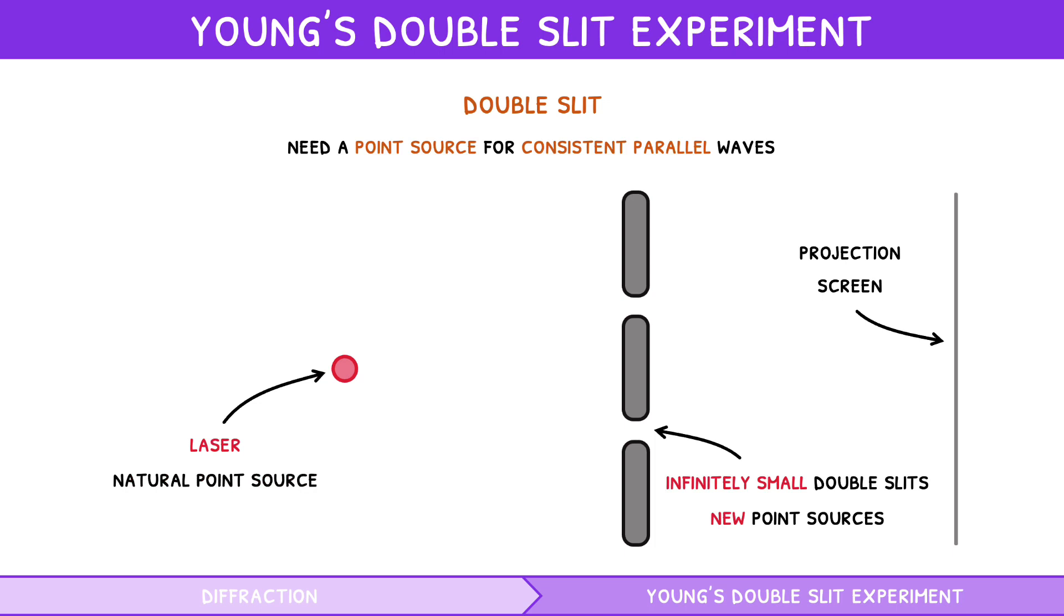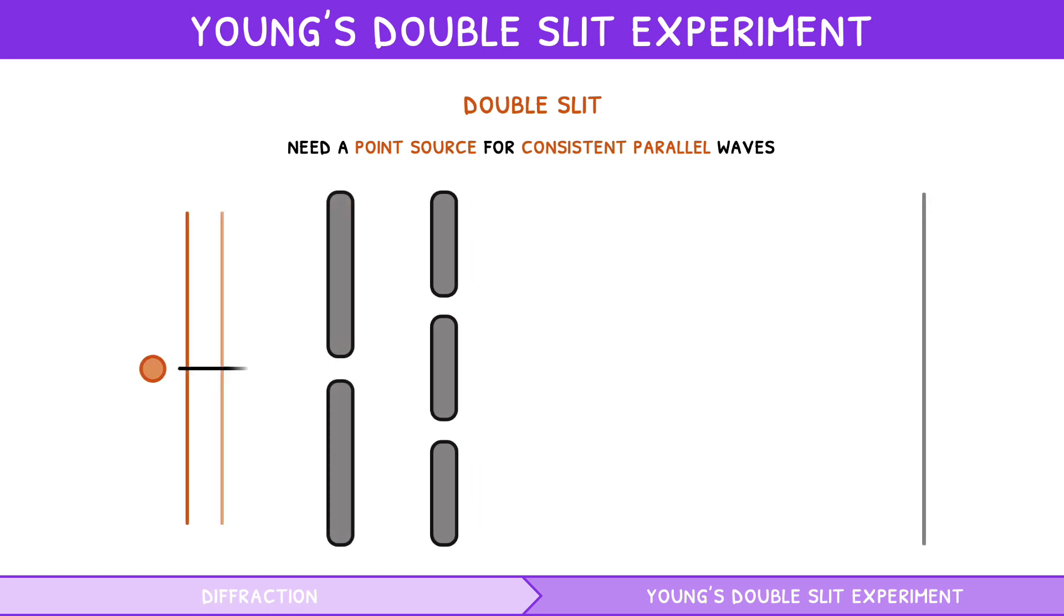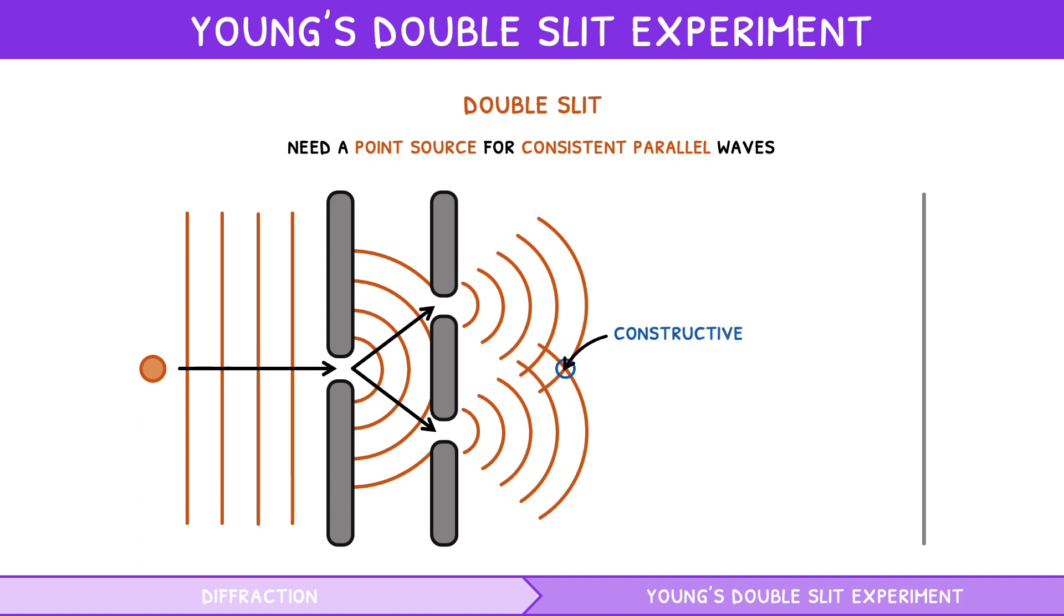So how does this work? Well, the mechanism is the same as with a single slit. The waves produced from each slit constructively interfere at wave junctions and destructively interfere between wave junctions. This produces a series of equally spaced and intense maxima separated by minima, called fringes.